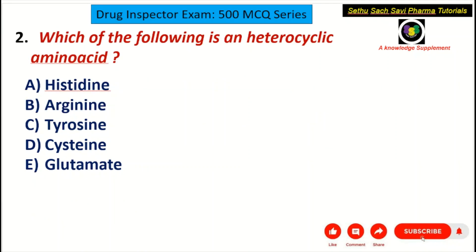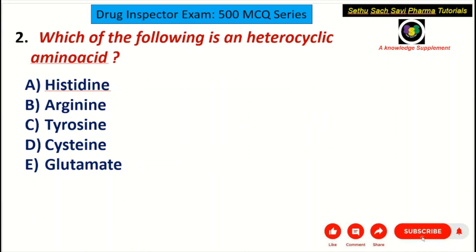Which of the following is a heterocyclic amino acid? A choice: histidine. B choice: arginine. C choice: tyrosine. D choice: cysteine. And E choice: glutamate.